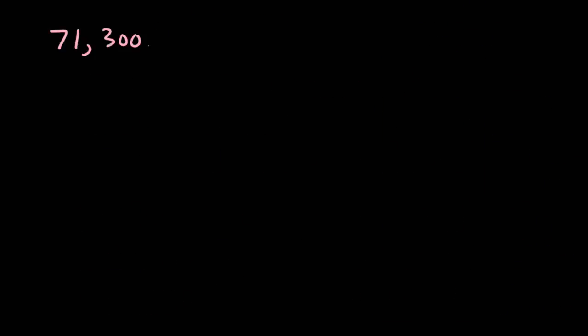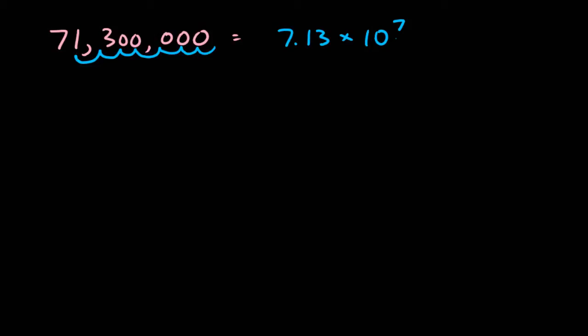To write a number in scientific notation, such as 71,300,000, we need to count the number of places we move the decimal to wind up with a number between 1 and 10. In this case, we wind up with the number 7.13, and we had to move the decimal a total of 7 places. Since the number is really big, we have a positive exponent, and we'd read the number as 7.13 times 10 to the 7th.